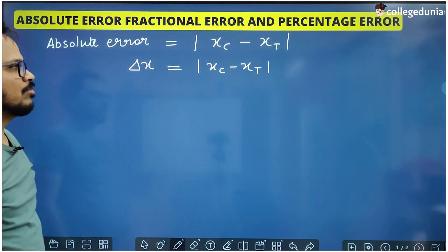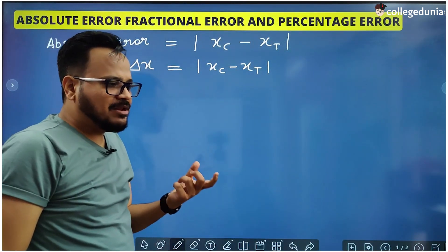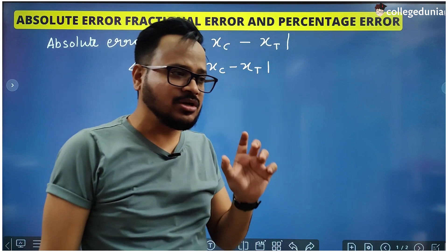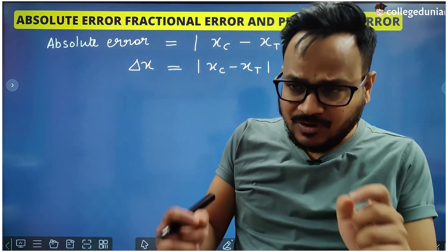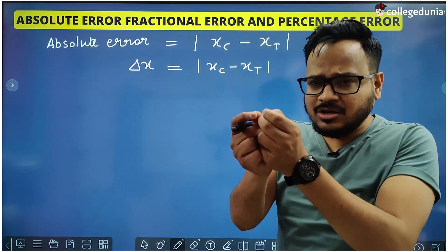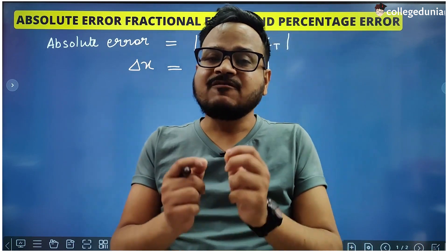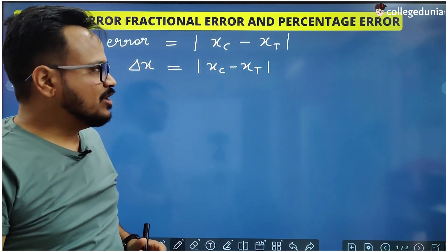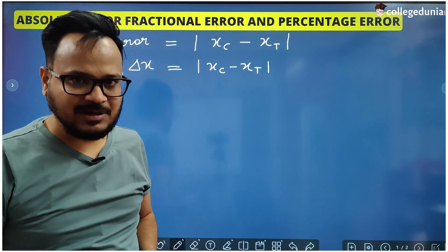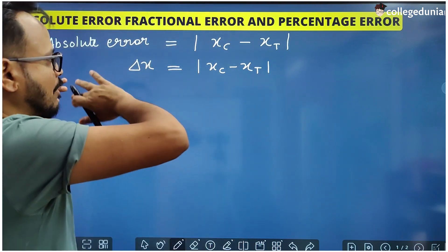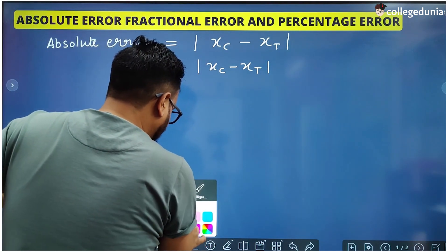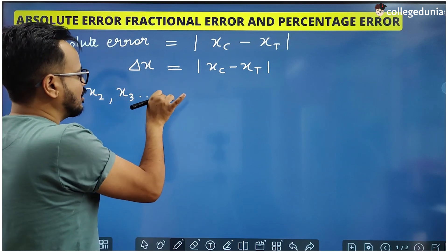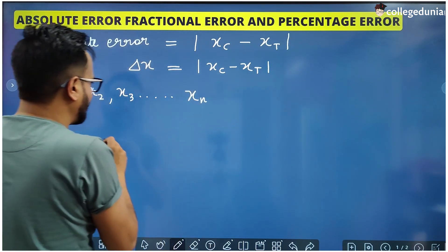When you do an experiment in physics, you take more than one reading to make sure you are performing the experiment correctly and to reduce the probability of error. Generally we take at least three readings. So if the outcomes of an experiment are x1, x2, x3 up to xn, we are going to find the absolute errors in all of these.